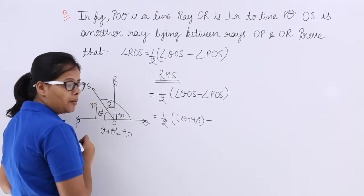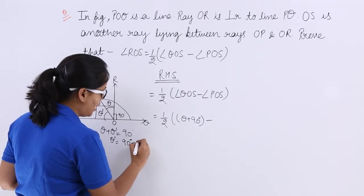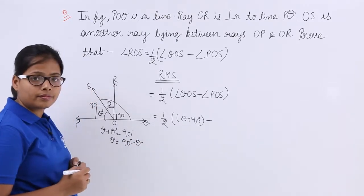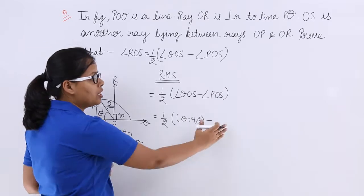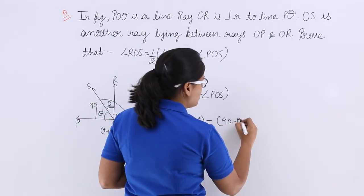Now you know what will be the value for theta dash: 90 degree minus theta. So now substitute this value here, 90 degree minus theta. Now solve out this bracket.